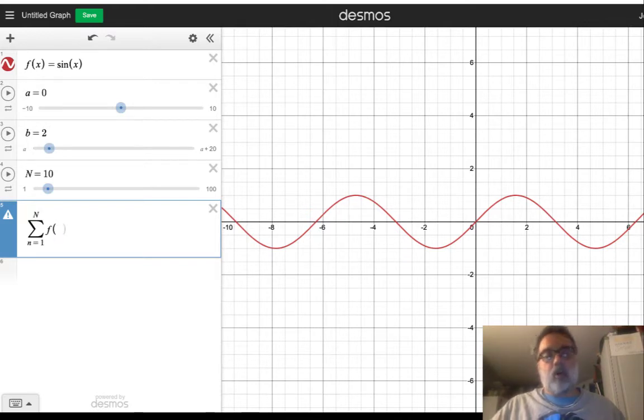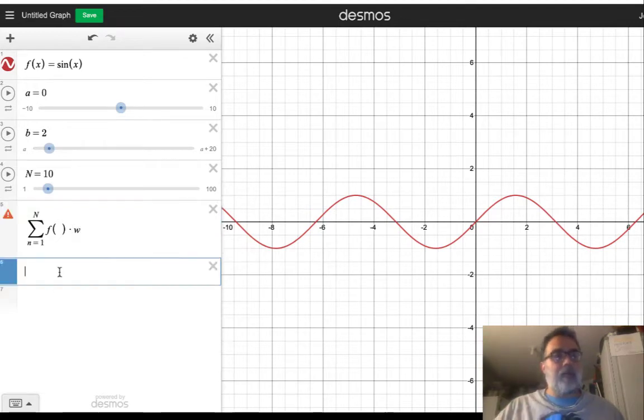So we're going to be sampling the function at these points and then multiplying times the width of the rectangles that we make. So let's try to figure out what should that width be. It's giving us an error message because we don't have all the details filled in here.